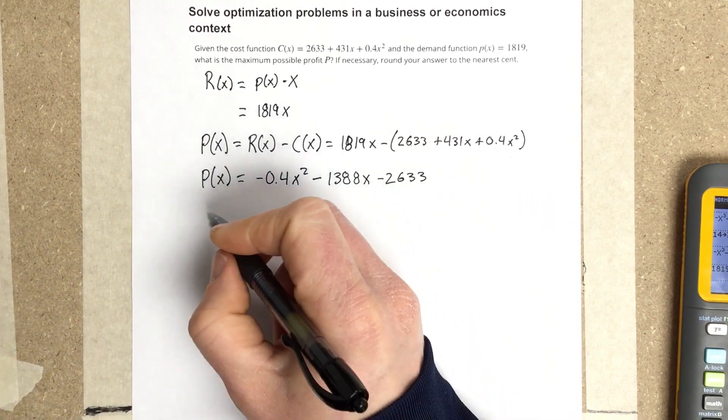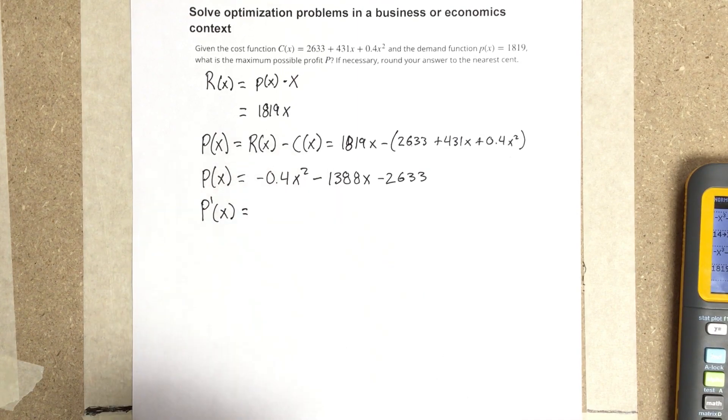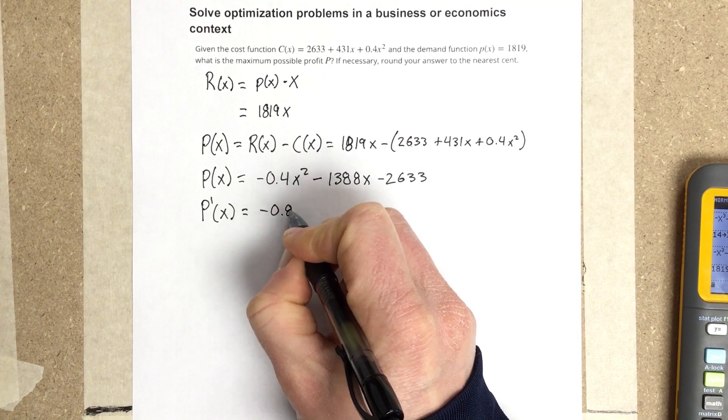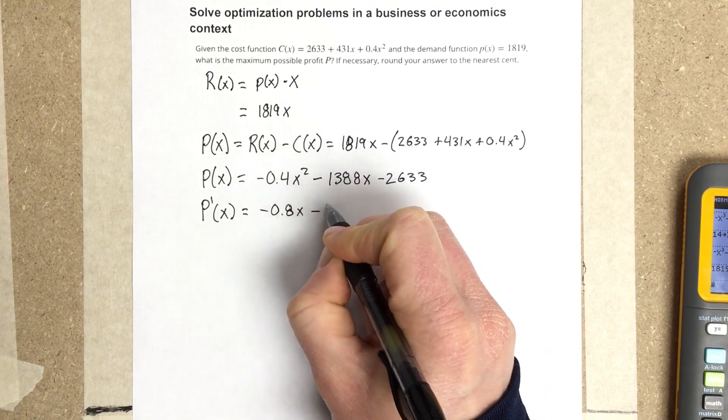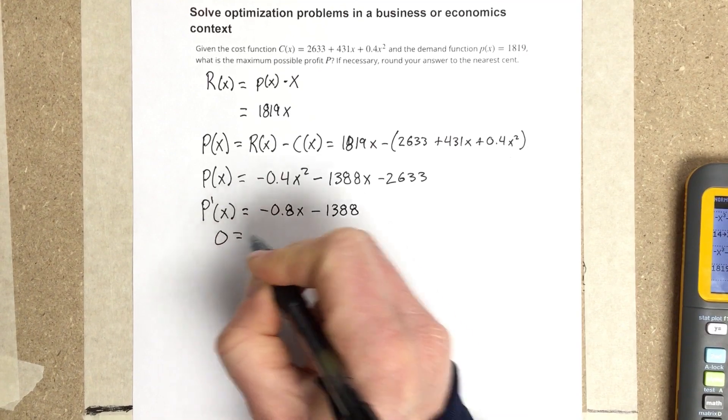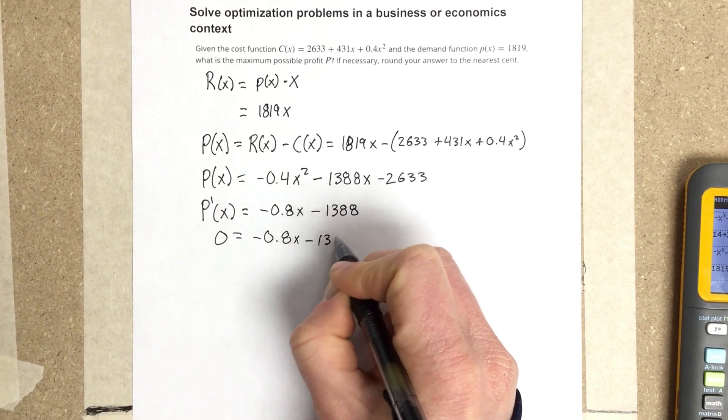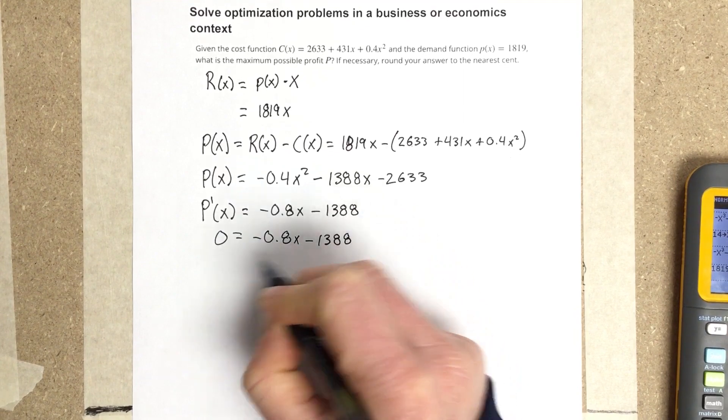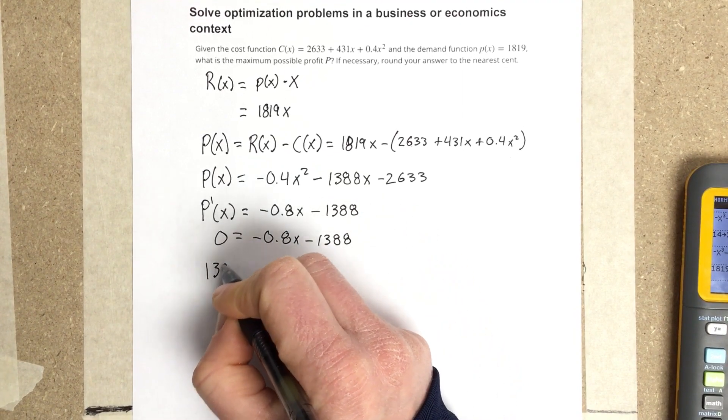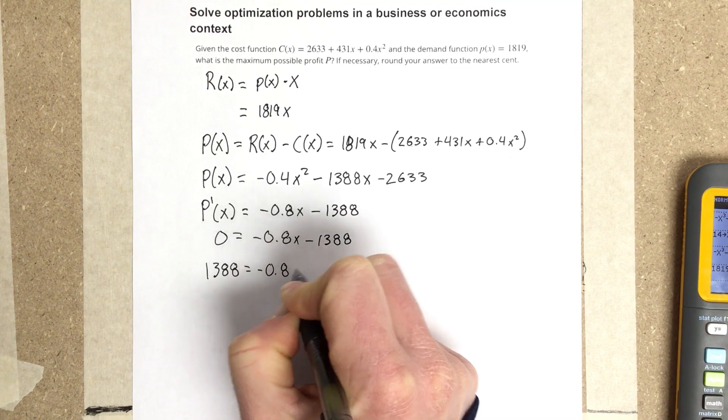To maximize profit, take the derivative of the profit equation and set it equal to zero. P'(x) = -0.8x + 1388 = 0. Rearranging: 1388 = 0.8x.